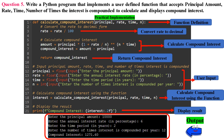In line 18, we call calculate_compound_interest with the user-provided values for principal, rate, time, and n to calculate the compound interest. The result is stored in the variable interest. In line 21, we display the calculated compound interest using the print function. The ':2f' format specifier in the f-string ensures the result is displayed with two decimal places. You can check the output on the console.